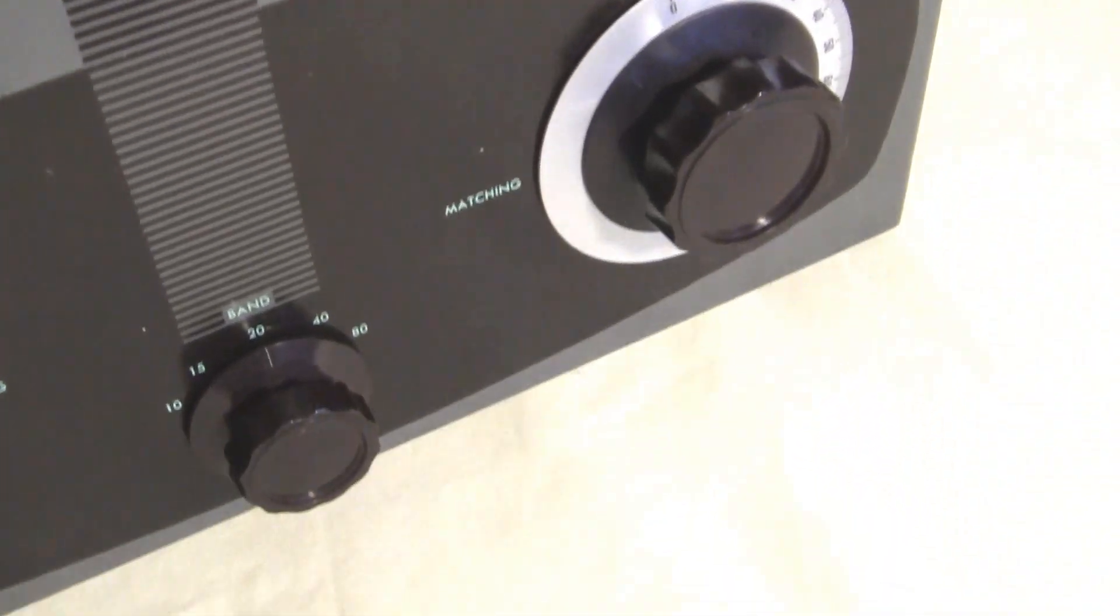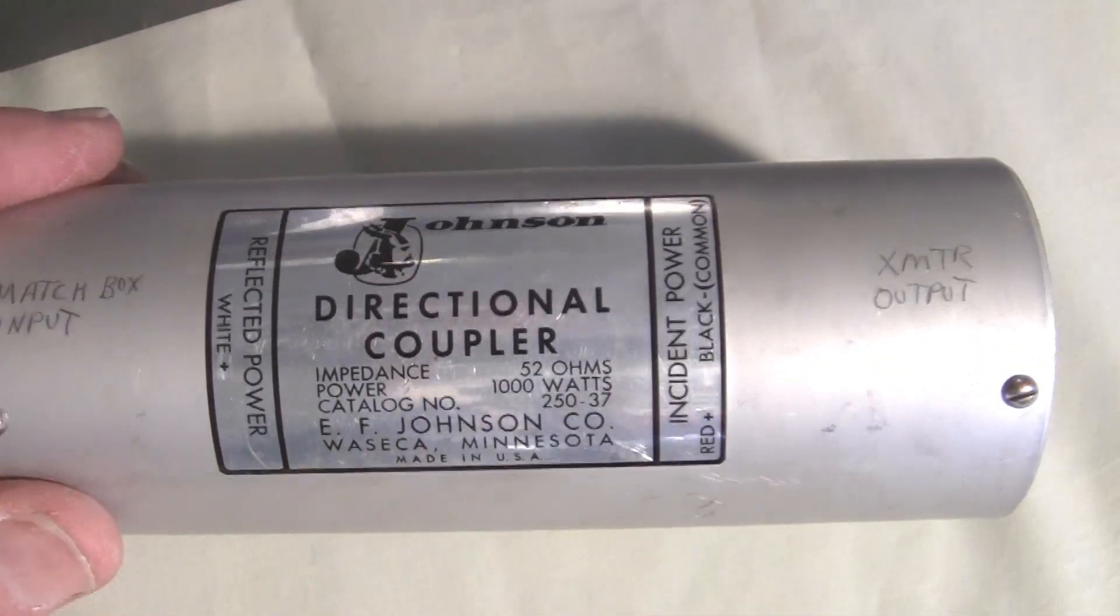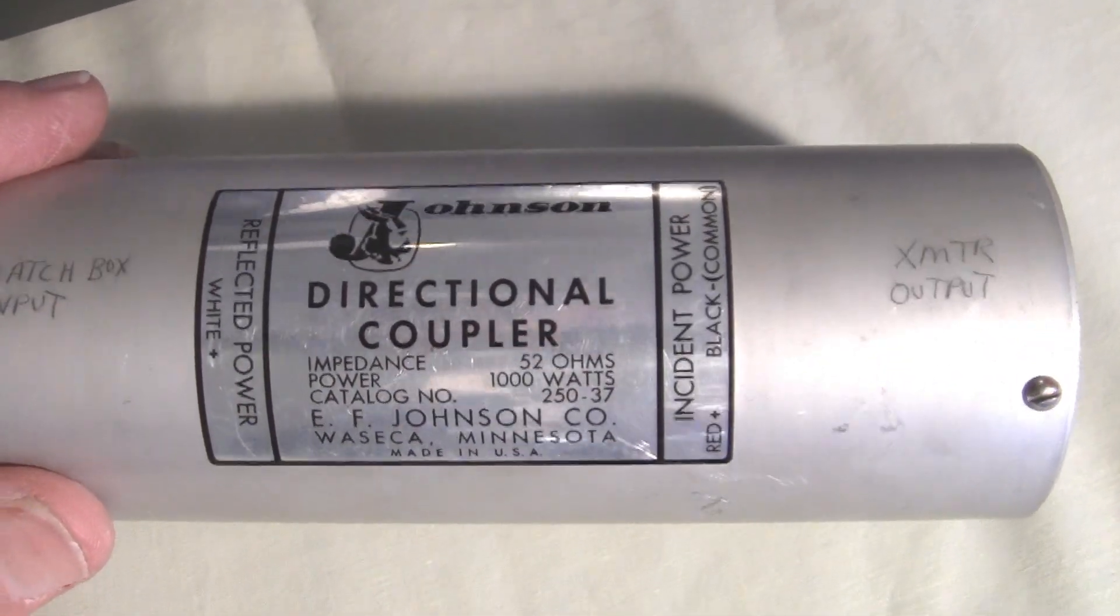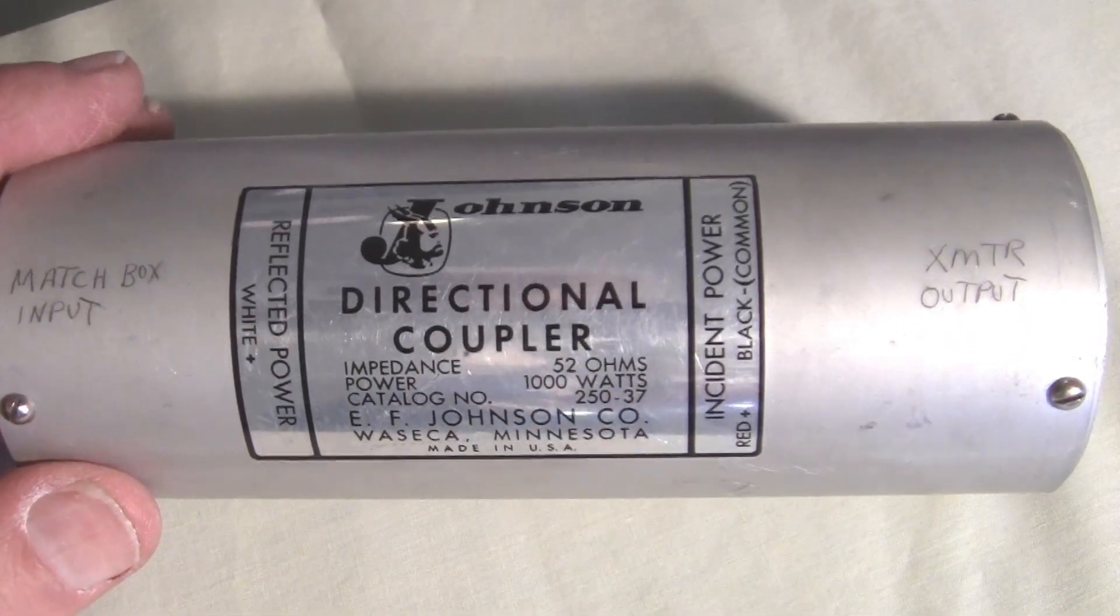This is used in conjunction with the Johnson directional coupler. We'll take a closer look at this coupler, but this is what was used to measure power and SWR.